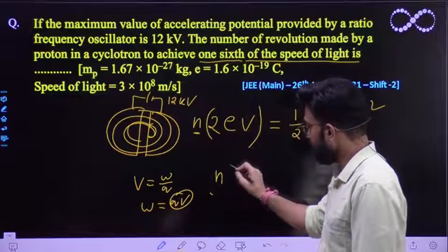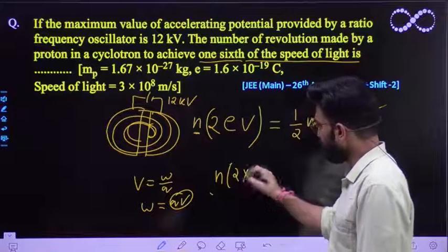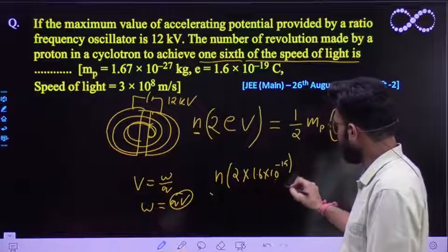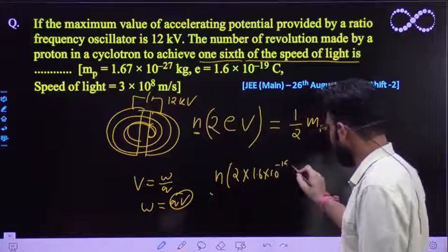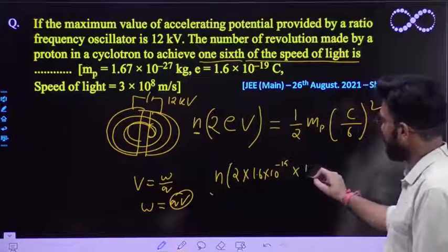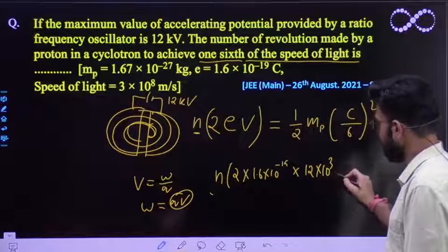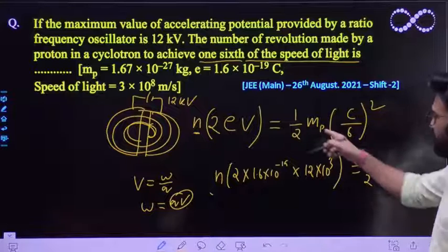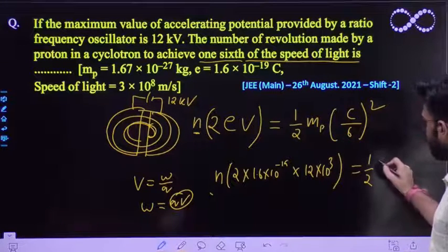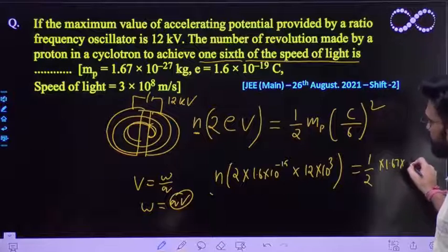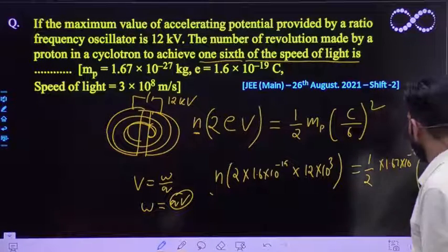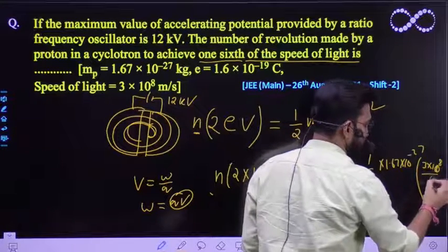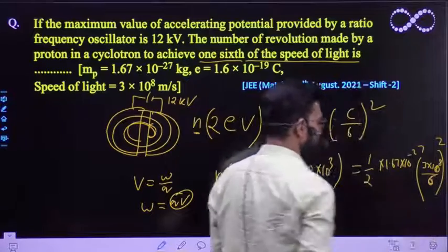So it must be equal to, putting the value, what you will be getting as 2 into electron proton charge 1.6 into 10 raise to power minus 19, then multiplied by potential which is 12 kilo. So kilo is nothing but 10 raise to power 3 volt. So this must be equal to half mass of proton which is 1.67 into 10 raise to power minus 27 multiplied by speed of light is 3 into 10 raise to power 8 divided by 6 whole square. So this is the expression that you are getting.